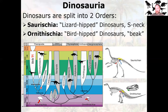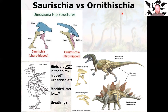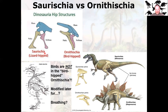Saurischia versus Ornithischia — dinosaur hip structures. Saurischian: lizard-hipped, the pubis points forward. Ornithischian: bird-hipped, the pubis points backwards with the ischium. If you look at a pigeon skeleton, the pubis points backwards. So birds are not bird-hipped Ornithischian dinosaurs — well, they share the same characteristic, but they're actually Saurischians. How is that possible? The pubis in birds later rotated through convergent evolution with the Ornithischians. The earliest birds, like Archaeopteryx, still have the Saurischian hip. Later, the pubis rotates backwards — likely to make room for air sacs that make bird breathing really efficient to maintain a high metabolism for flapping.